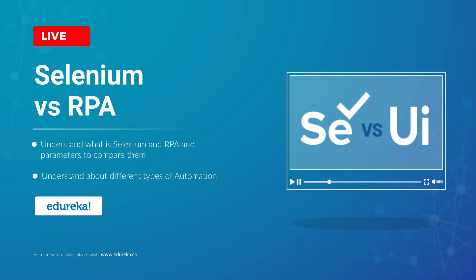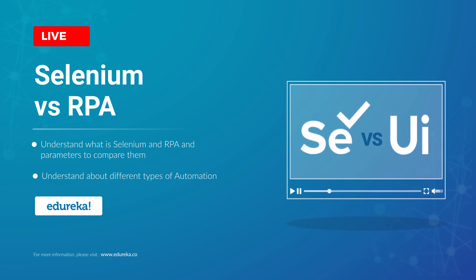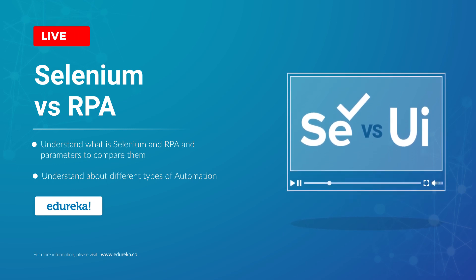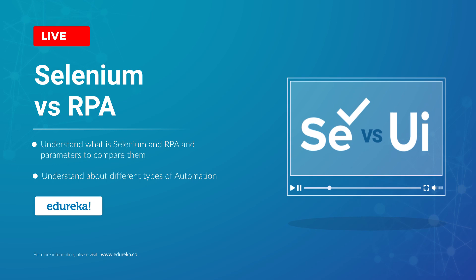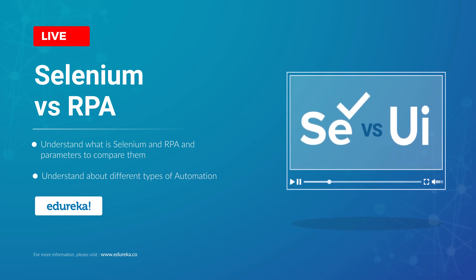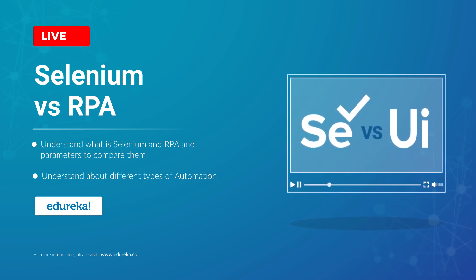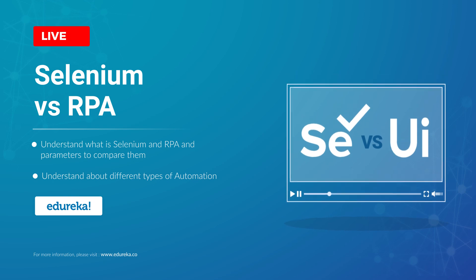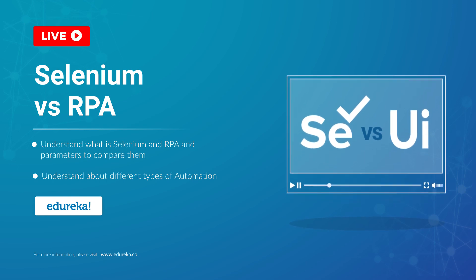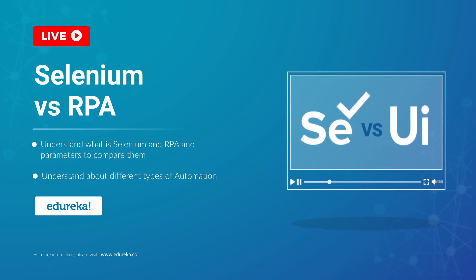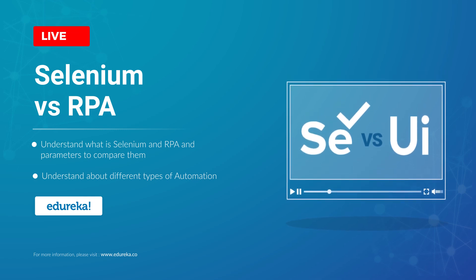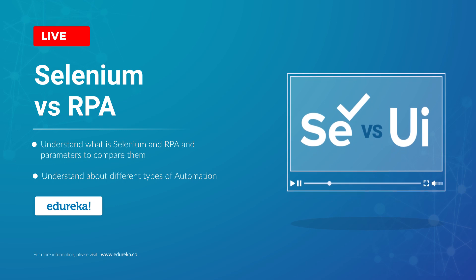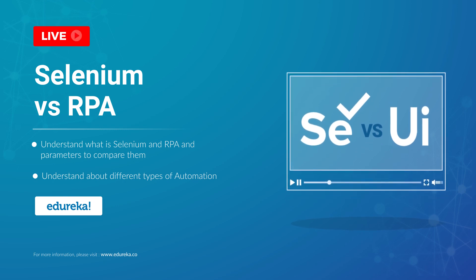Technology in recent days has reached its peaks and the growth of automation has added more wings to this transformation, from automating a simple unit test to automating the whole business process. Technology has augmented its way to the digital era. In this module, we are going to compare the two booming automation technologies that have been in the industry for more than a decade: robotic process automation and Selenium.